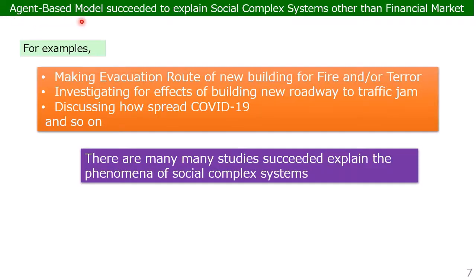Agent-based models have succeeded in explaining social complex systems other than financial markets. For example: evaluating evacuation routes in new buildings for fire or terror, investigating the effect of new roadways on traffic jams, and discussing how COVID-19 spreads. There are many studies that succeed in explaining the phenomena of social complex systems.